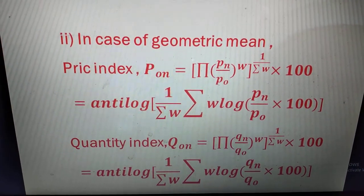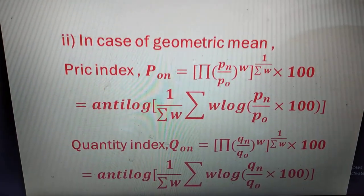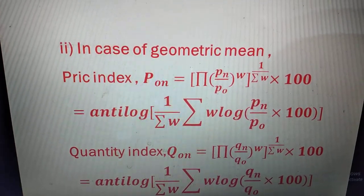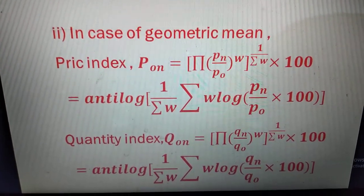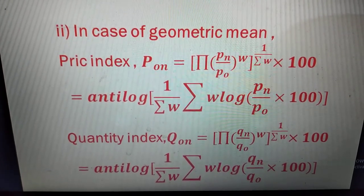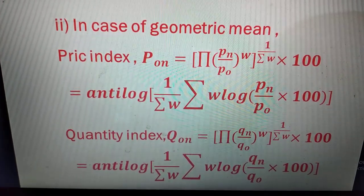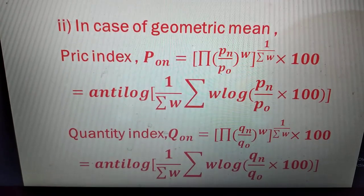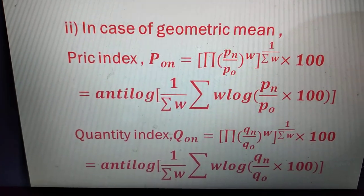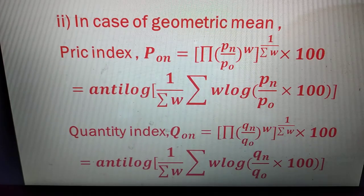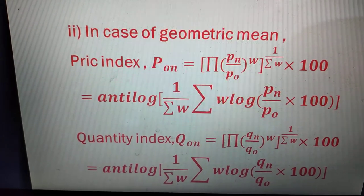The quantity index Q-suffix-on equals the product of (q-suffix-n divided by q-suffix-o) raised to the power w, then raised to the power 1 by summation of w, multiplied by 100. Another system: antilog of (1 by summation w) multiplied by summation of w times log of (q-suffix-n by q-suffix-o times 100). This is the quantity index of the weighted average aggregate method.